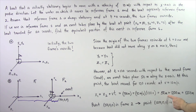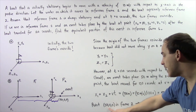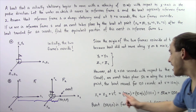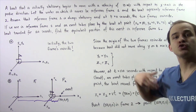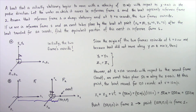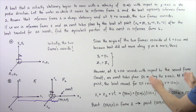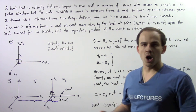That gives us 50 meters plus 1,200, which equals 1,250 meters. So the point (50, 0, 0) in reference frame number two is transformed into the point (1250, 0, 0) in reference frame number one. This point in frame two is equivalent to this point in frame number one.